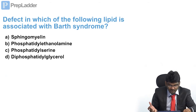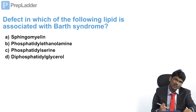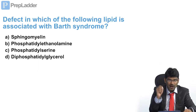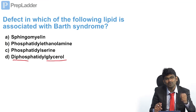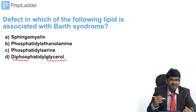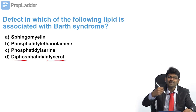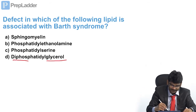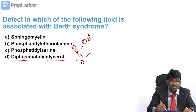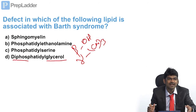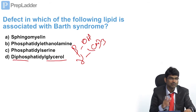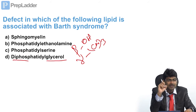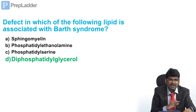The defect in which lipid is associated with Barth syndrome? The answer is cardiolipin. The other name of cardiolipin is diphosphatidylglycerol — you must know this alternate name. Carnitine (beta-hydroxy gamma-trimethylammonium butyrate) is involved in transport of long-chain fatty acids to mitochondria for beta-oxidation. Glutathione is gamma-glutamyl cysteinylglycine — you must know this. Cardiolipin is diphosphatidylglycerol.